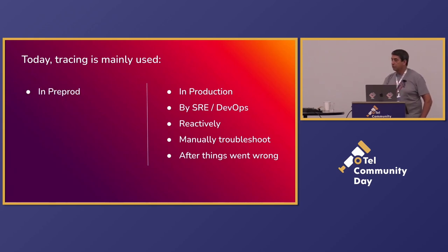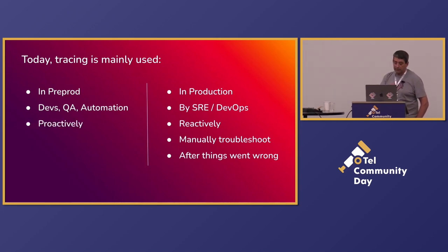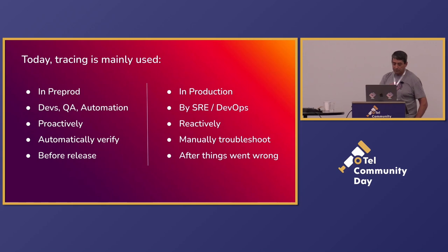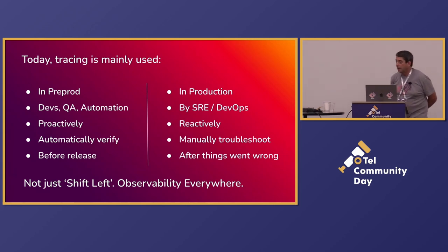Proposing using it also in pre-prod by devs, QAs, automation engineers, in addition to SREs and DevOps — using it proactively to automatically verify before you actually release, so you prevent problems. So we're not just shifting this work to the left, we're keeping it on the left and the right, and we're having observability everywhere.